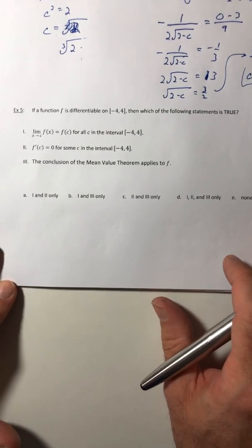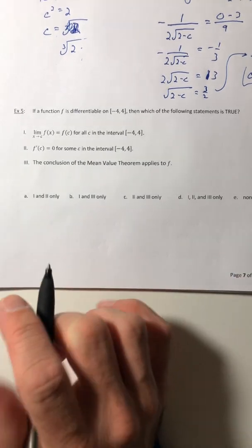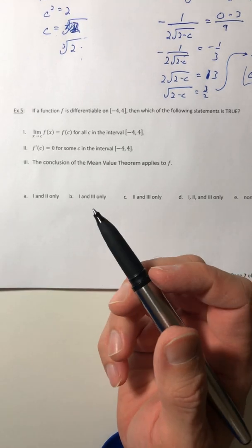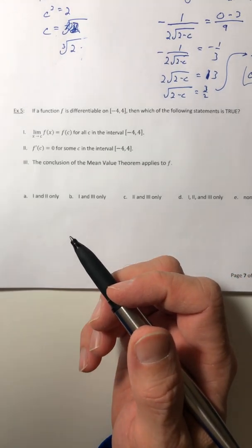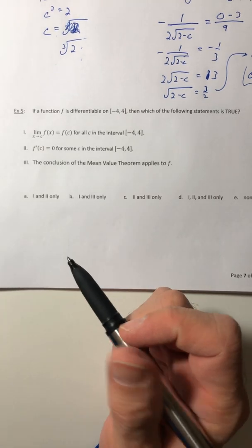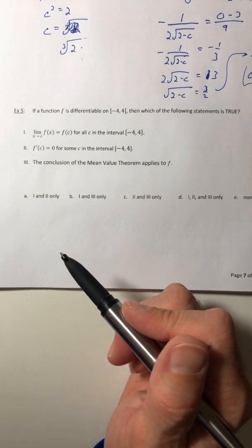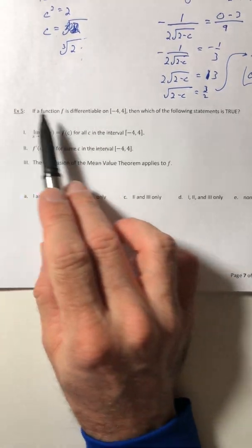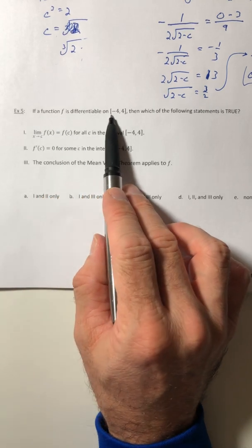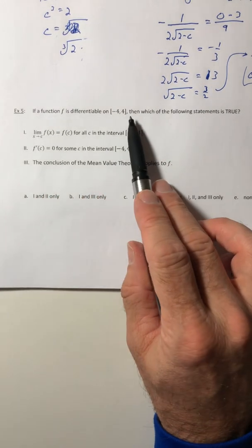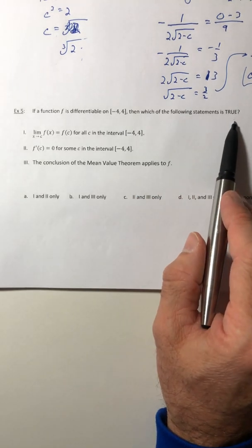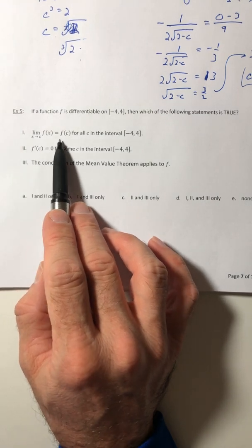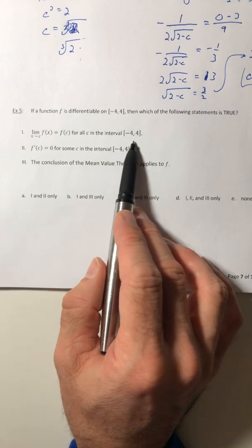All right, we have one more example, and this is more of a critical thinking type question. So something similar to what you might find on the exam. For me, it's not enough to just know what the theorem says. You've got to understand the concept that's driving it. Like, do you actually know and understand what it says, or can you just regurgitate the material? Okay, so example five. If a function f is differentiable on the closed interval from negative four to four, then which of the following statements is true?